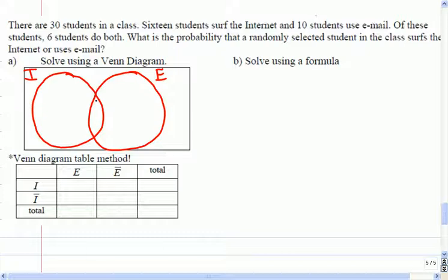Good, the both part is the easy way to start. Six do both. So how many are left over that are just doing email? Right, there's four left over because 10 were doing email, and six we've already counted. What about how many are just doing internet? Right, and what's missing? The other 10 which aren't doing any, right. So there's 30 in the class, 20 have been counted already here. So 20 here, 10 that are doing neither.